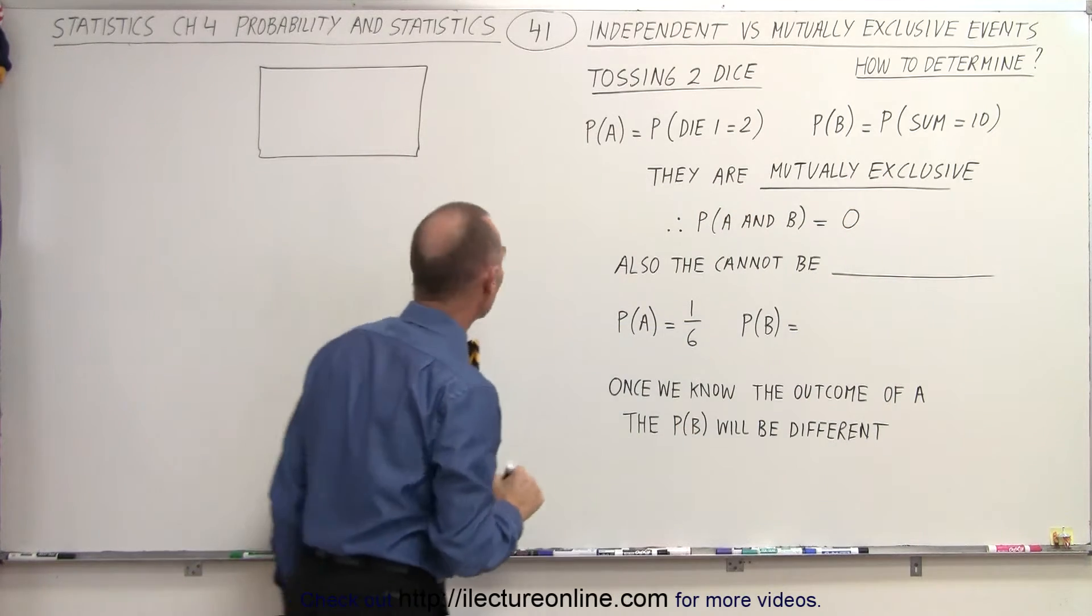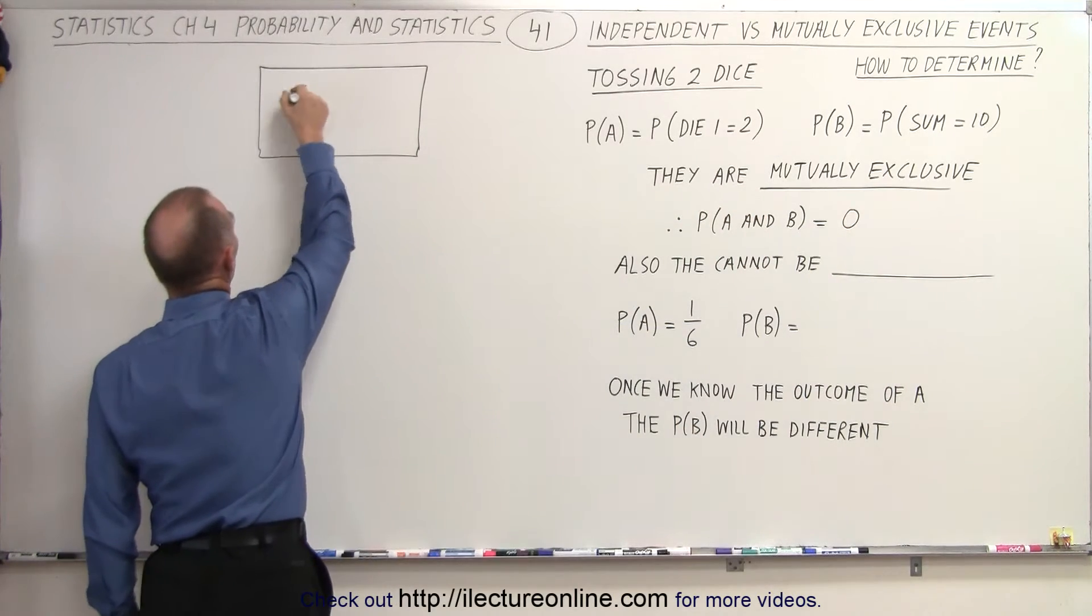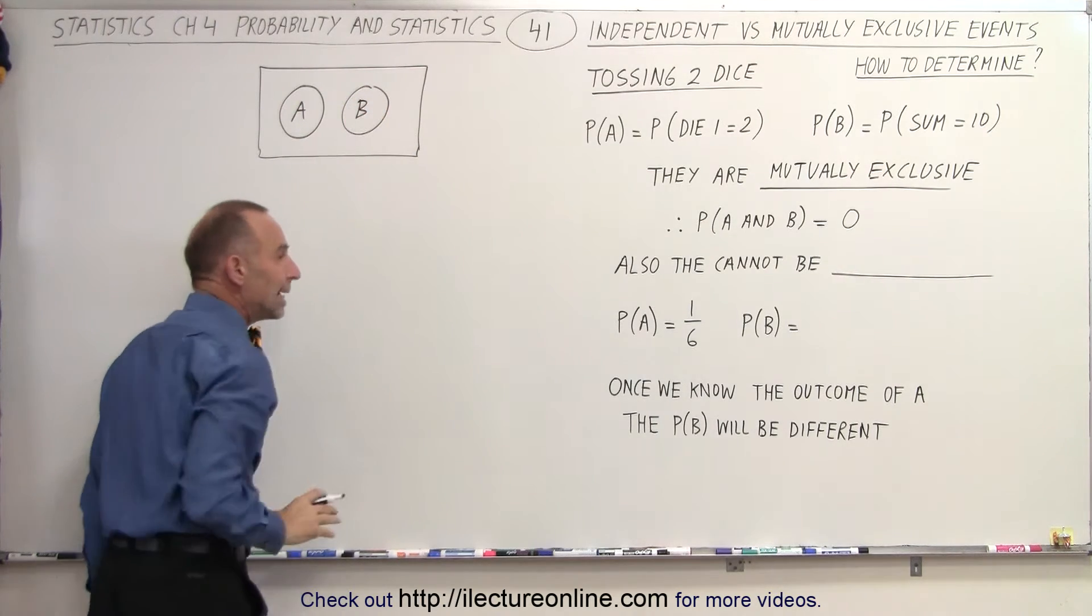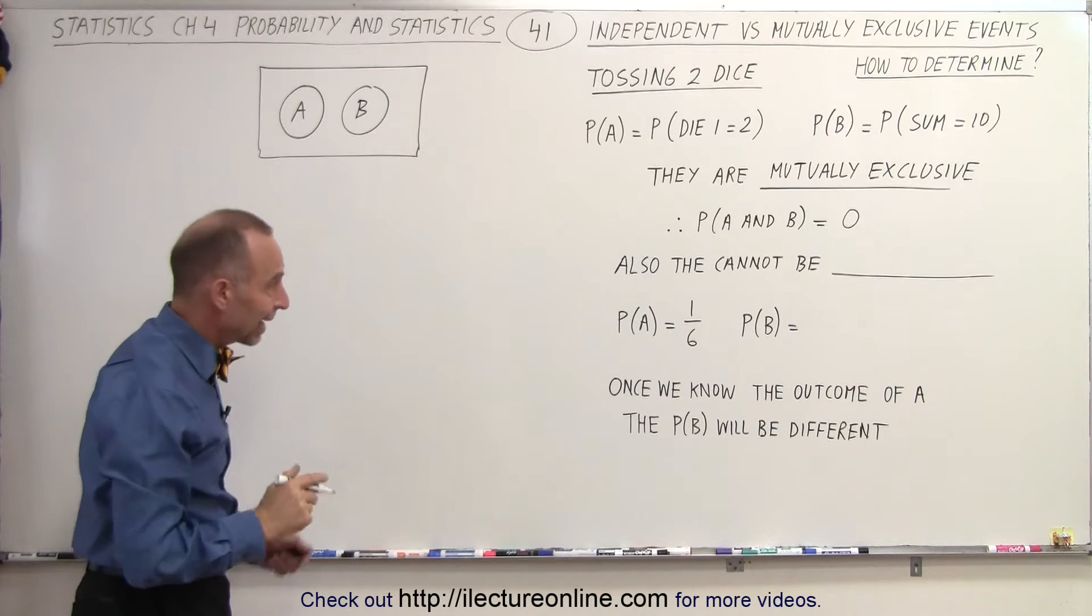And of course, if they're mutually exclusive and we draw a Venn diagram, we can see that there's no overlap, that there's no possible way that event A and event B can occur at the same time.